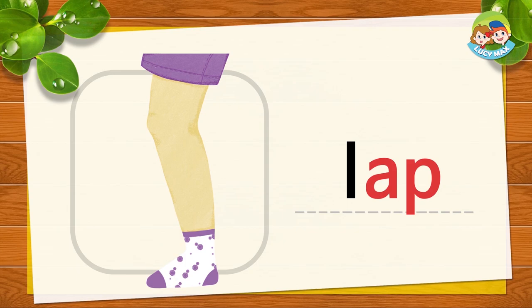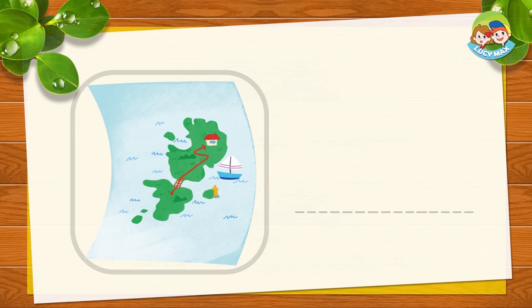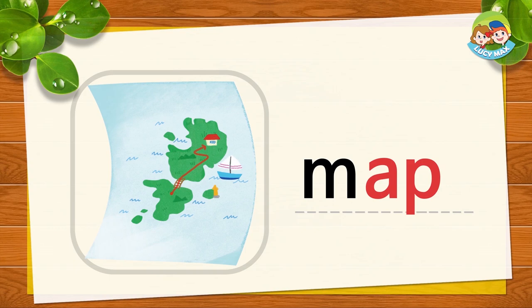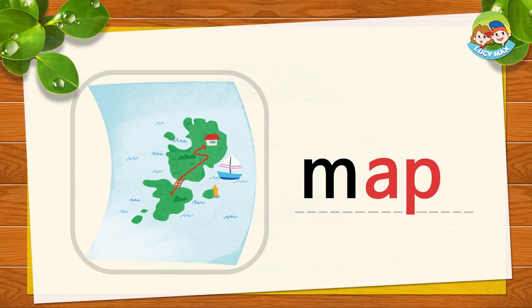This is a map. You use a map to find a place. M-AP together is map. Map, map, map. Now you try.